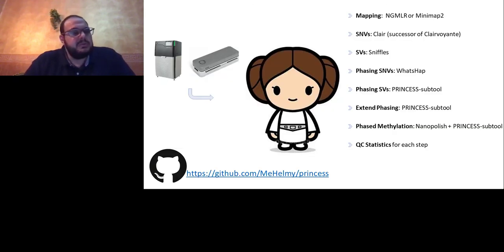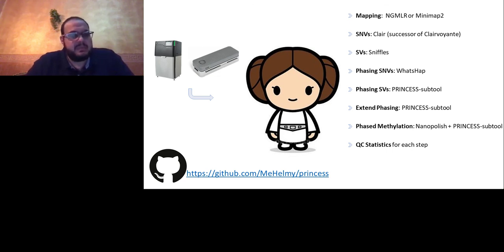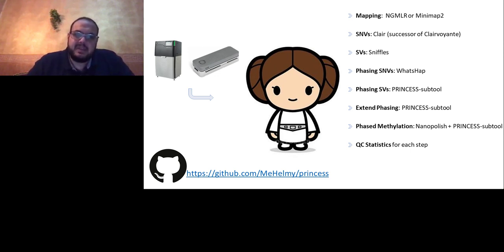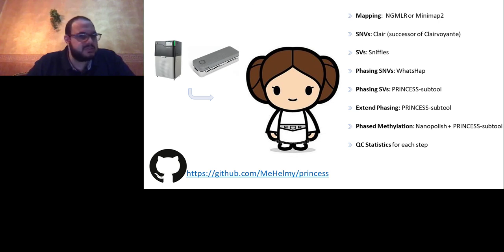In conclusion, PRINCESS uses long reads from Oxford Nanopore or PacBio, maps reads using NGMLR or Minimap, identifies SNVs using Claire, identifies structural variants, phases both SNVs and structural variants, can extend phasing using parental SNVs, identifies and phases methylation, and provides quality statistics for each step — all using just one library preparation. PRINCESS is already available in beta version on GitHub, and feedback is very welcome.